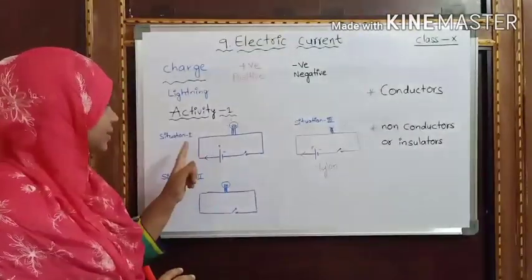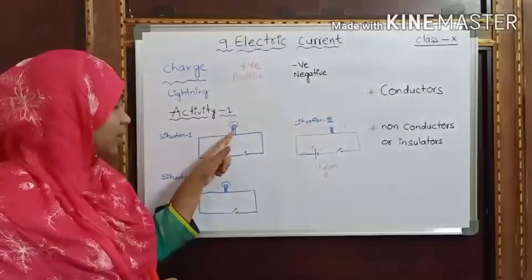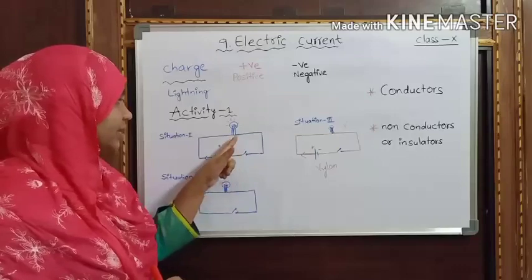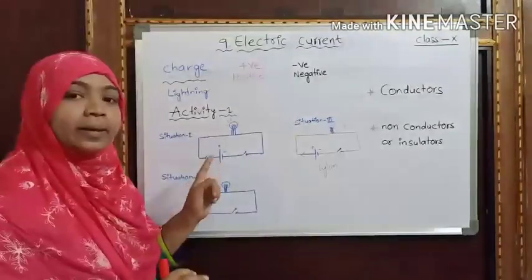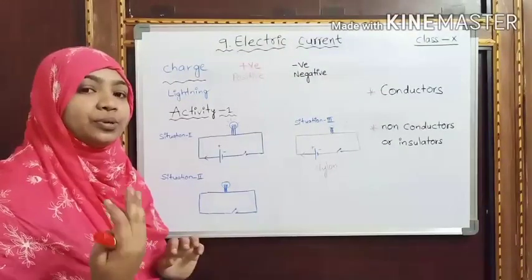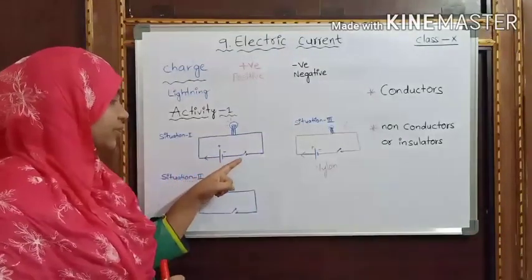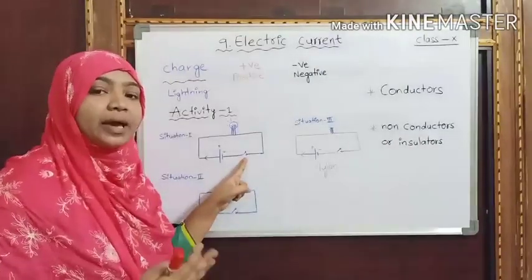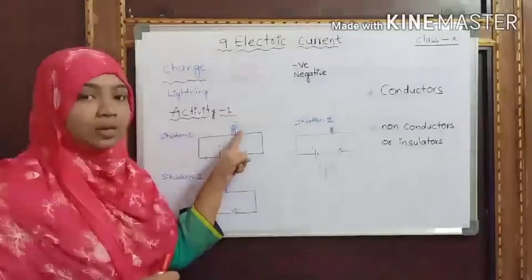Let us consider this as Situation One. In this situation, we have taken an electric bulb, battery, switch, and copper wires as connectors. A battery is a device which can convert chemical energy into electrical energy. If you switch on the circuit, the bulb will glow.